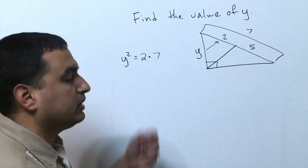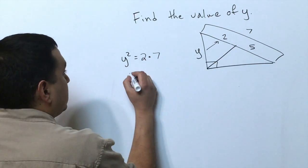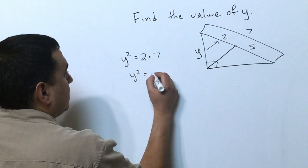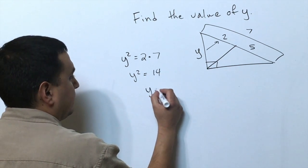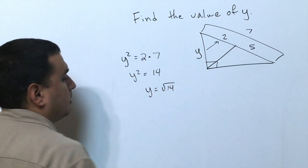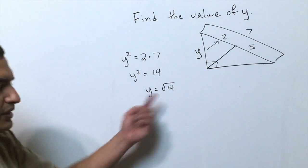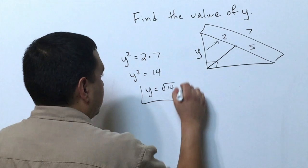To find y, I have to take the square root. y equals the square root of 14. 14 doesn't simplify, so that is going to be my answer.